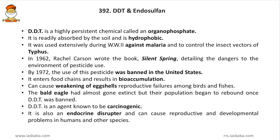DDT is a highly persistent chemical. Its chemical name is dichlorodiphenyltrichloroethane — it is an organochlorine compound, that is a carbon compound with chlorine. It is readily absorbed by soil and is hydrophobic, meaning it does not dissolve in water. It was used extensively during World War II against malaria and to control insect vectors of typhus and scrub typhus.